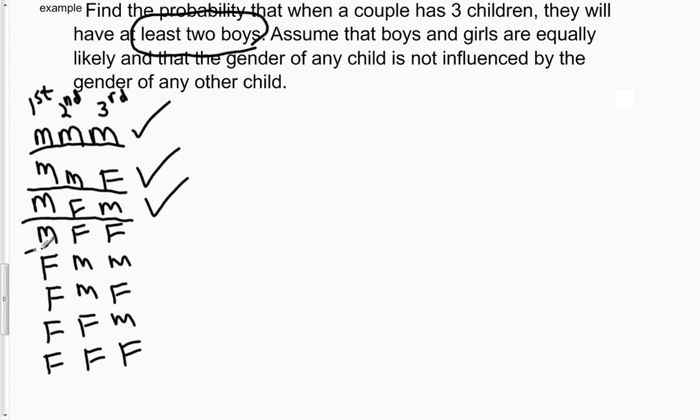Now the fourth row, there's only one boy. The oldest is a boy, but the middle and the youngest child are two girls. So that one does not fit the criteria for at least two boys.